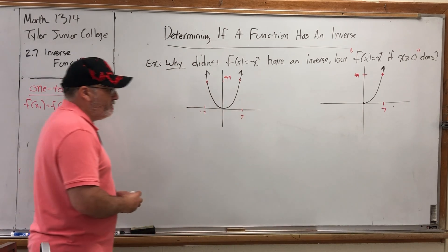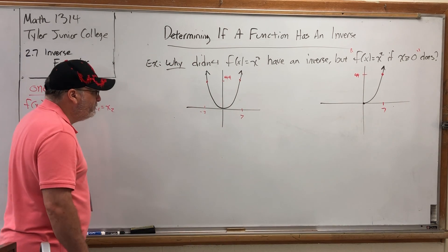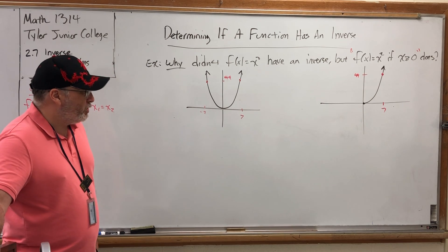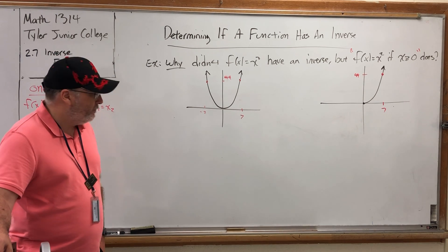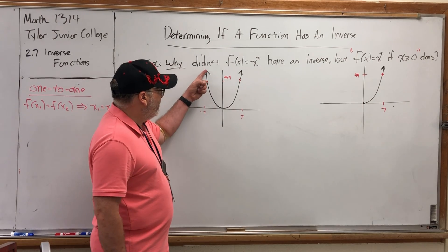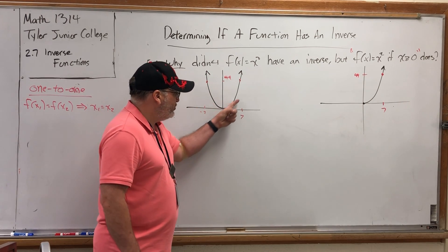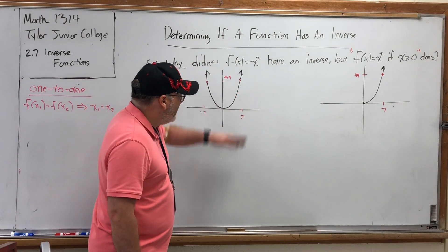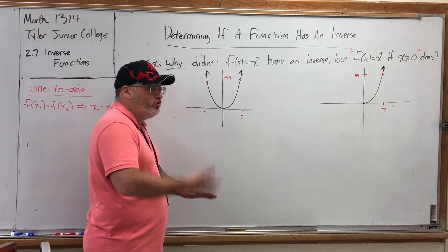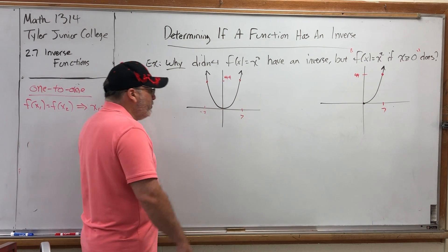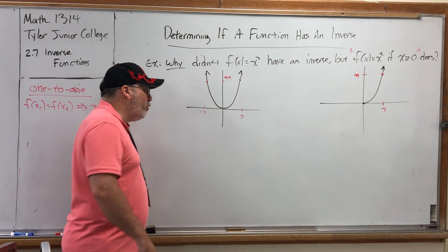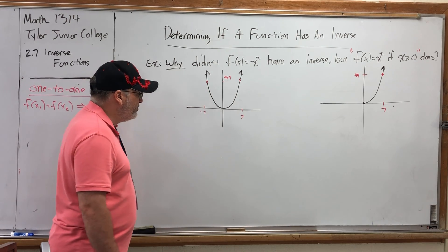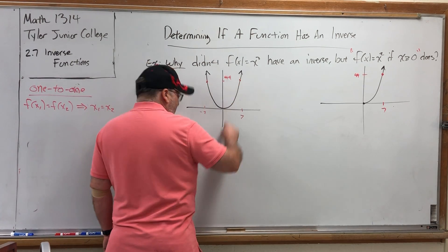So how can we spot this thing visually? Well, there's two ways to spot it. One is in terms of increasing and decreasing. Notice that this first graph starts out decreasing, and then it changes direction and goes increasing. If a graph changes direction, you will always be able to find two points or more that have the same y value but different x values.